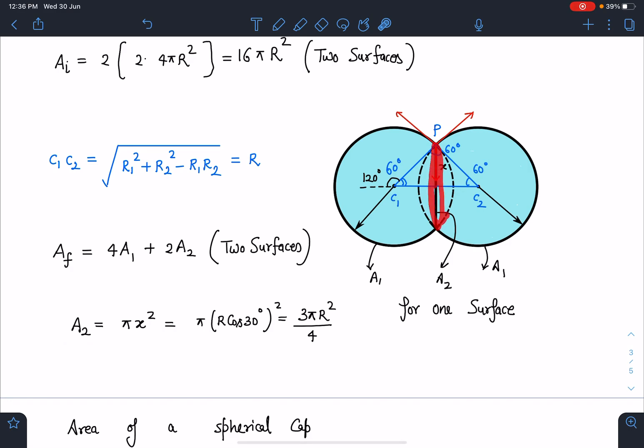So area of that circle is πx² where this x is nothing but R cos 30, this angle is 30, or you can say R sin 60 also. So it will become R times √3/2, so πR² times 3/4 will come.